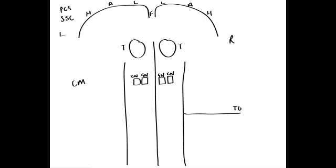Now let's start by looking at the spinothalamic pathway. The spinothalamic pathway is important in relaying pain and temperature, and some crude touch sensation, from sensory receptors on the skin to the central nervous system. Let's draw one of these fibres coming in. Here's the cell body of that primary neuron sitting in the dorsal root ganglion. This neuron then extends towards the central nervous system, passes through the dorsal rootlet, and will form a synapse in the dorsal grey horn.